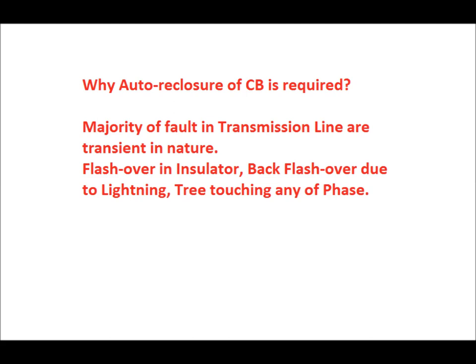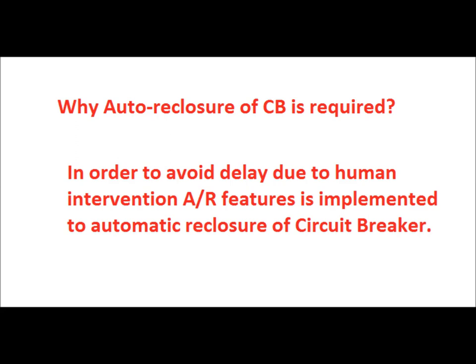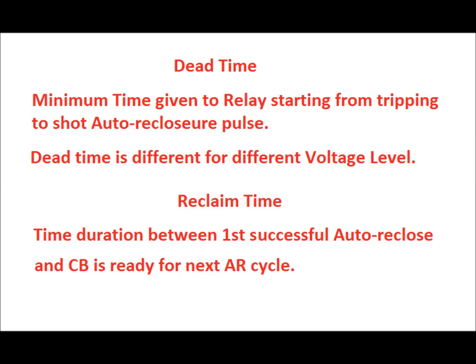In transmission lines, the majority of faults — about 80 to 85 percent — are transient in nature. Examples include flashover of insulators during foggy season due to low creepage distance, back-flashover due to lightning stroke, or a tree touching any phase of the transmission line. These faults clear after the breaker trips, so to maintain stability, automatic reclosing is required to avoid the time delay caused by human intervention.